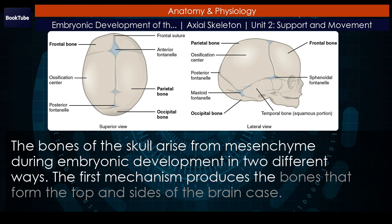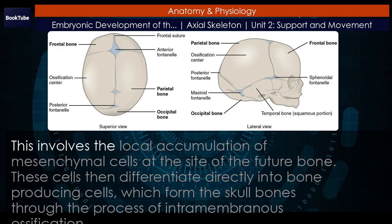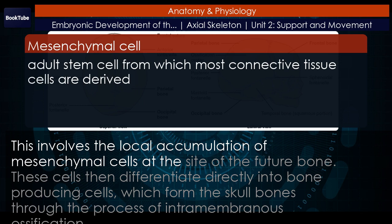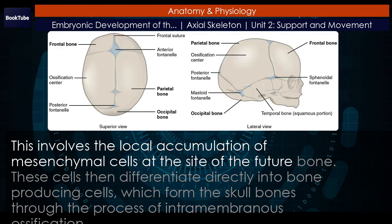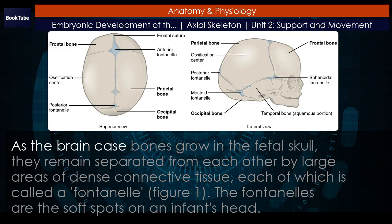The first mechanism produces the bones that form the top and sides of the brain case. This involves the local accumulation of mesenchymal cells at the site of the future bone. These cells then differentiate directly into bone-producing cells, which form the skull bones through the process of intramembranous ossification. As the brain case bones grow in the fetal skull, they remain separated from each other by large areas of dense connective tissue, each of which is called a fontanelle.